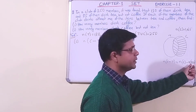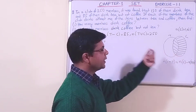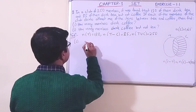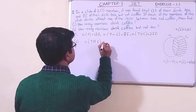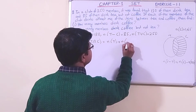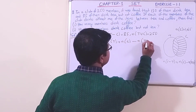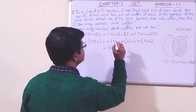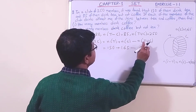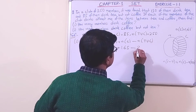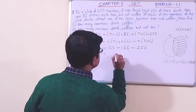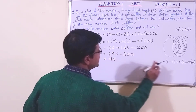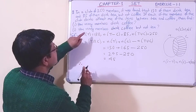But we do not know what n(T ∩ C) is, so let us find that first. We know that n(T ∩ C) = n(T) + n(C) - n(T ∪ C). Putting in the values: n(T) = 130, n(C) = 165, and n(T ∪ C) = 250. Adding 130 and 165 gives 295, then 295 - 250 = 45. So n(T ∩ C) = 45.